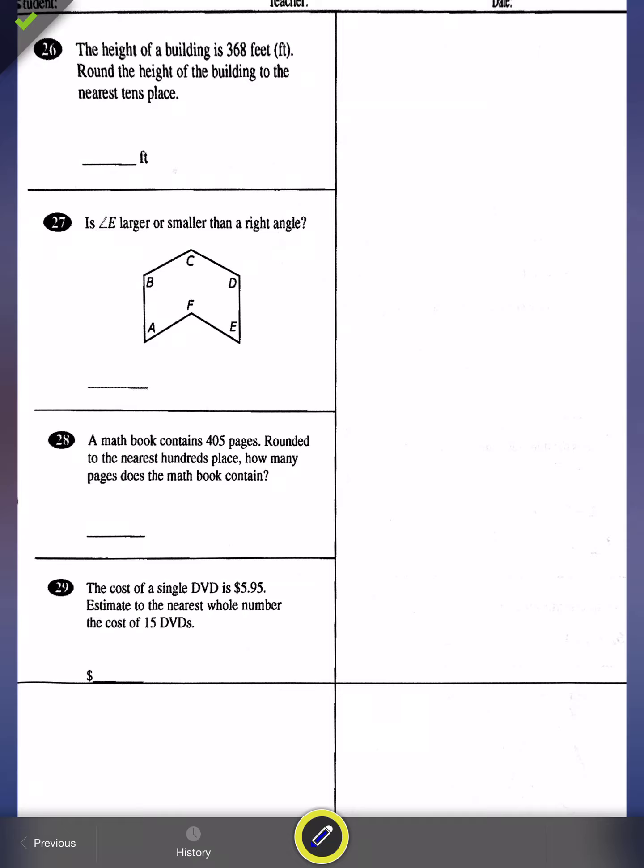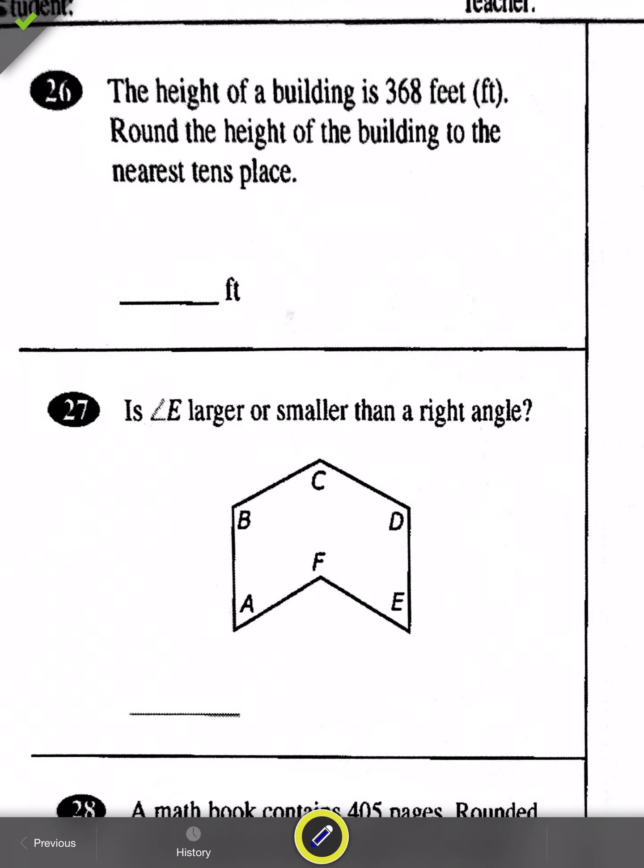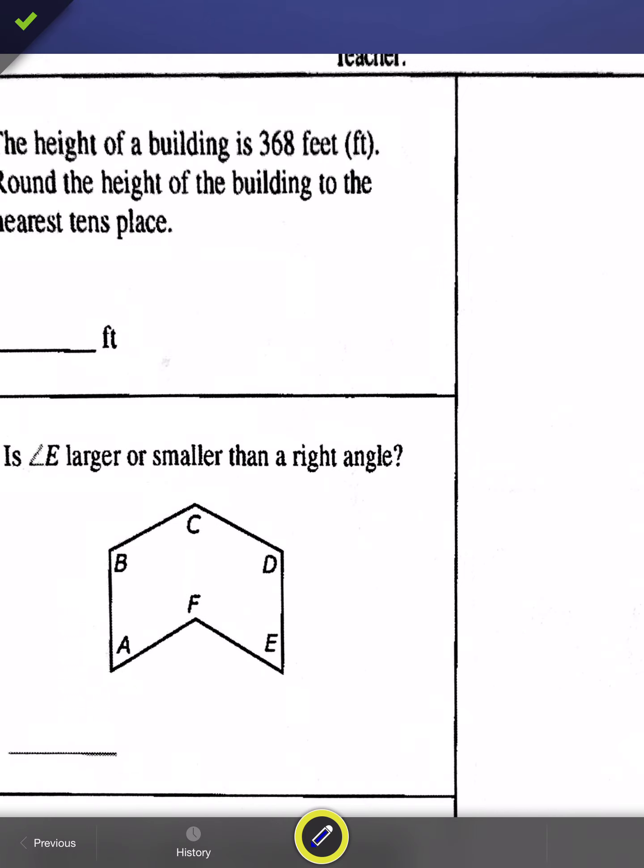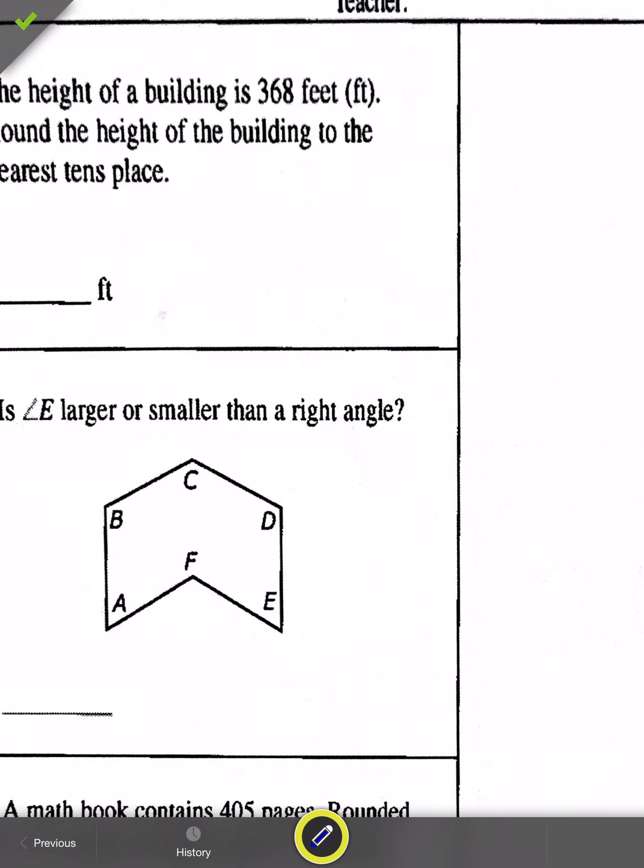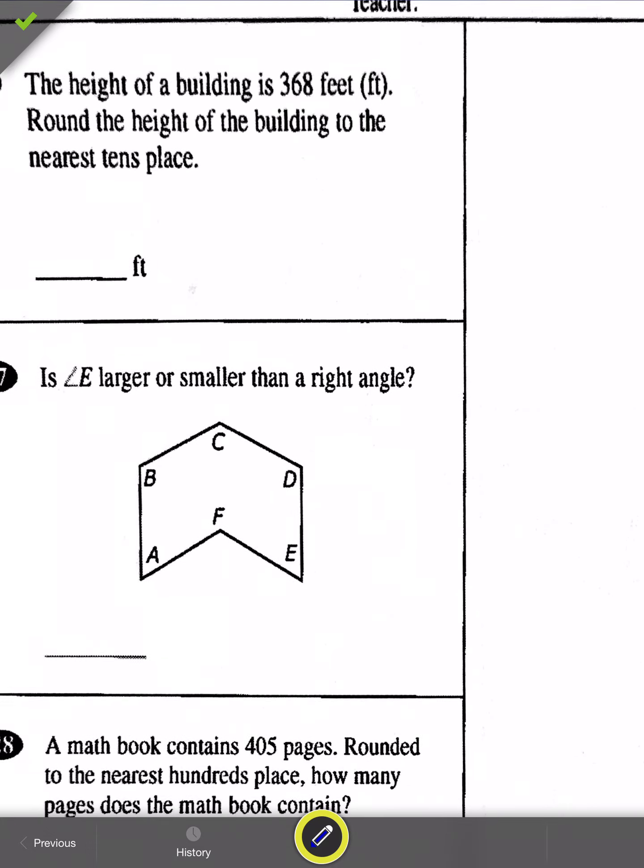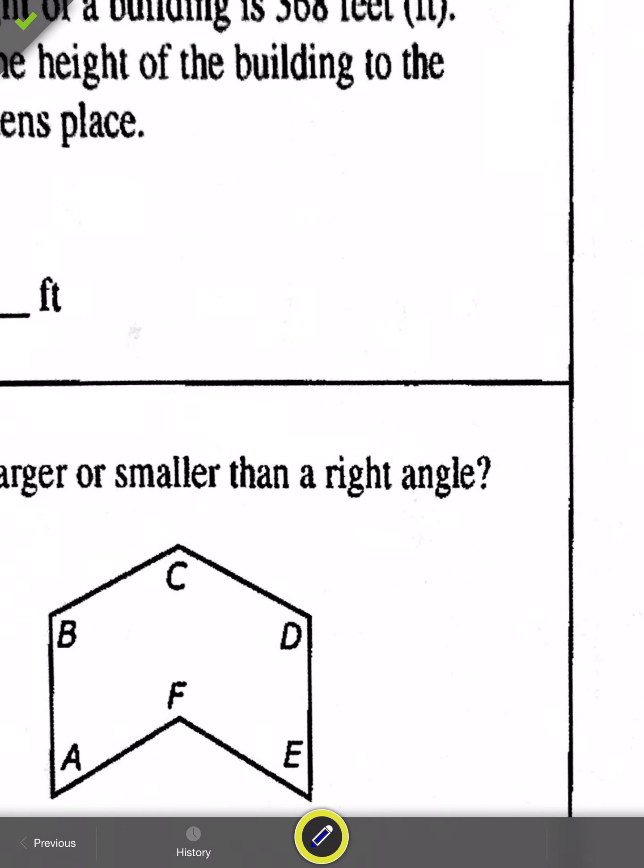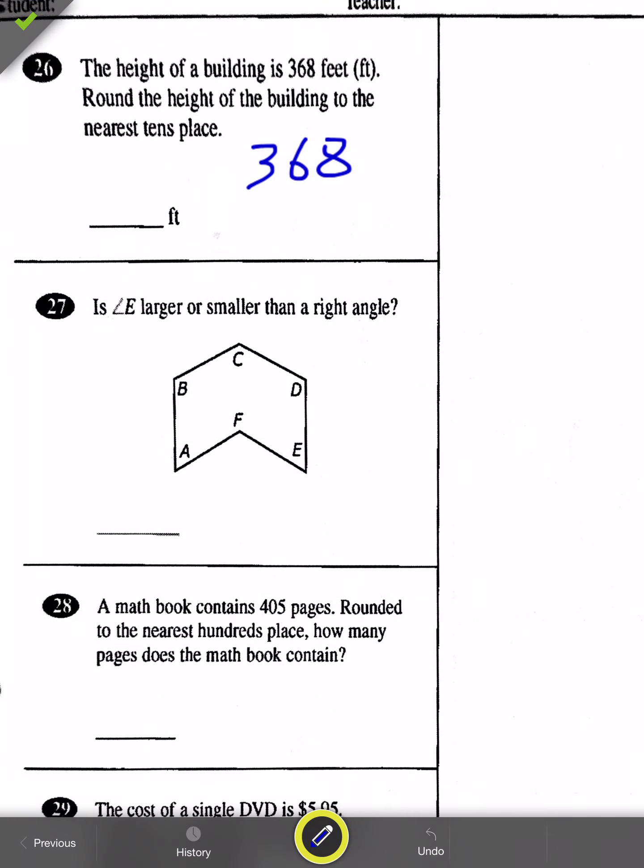Let's look at the second page and we are starting up here with a word problem. The height of a building is 368 feet. That's pretty high. Round the height of the building to the nearest tens place. Oh good, another place value question. We just tackled one of these. So I got the number 368, and they would like us to round to the nearest tens place. I'm going to highlight that because that's important. So I have to identify what number is in the tens place.